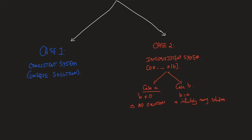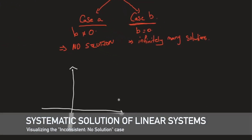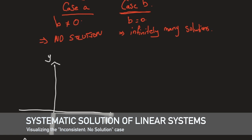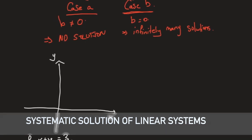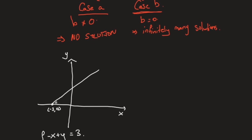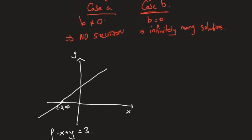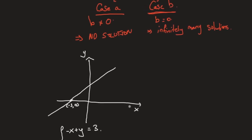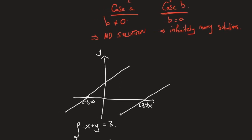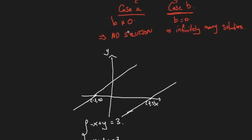To explain this graphically — imagine a 2D system with an x-axis and a y-axis. One equation is −x + y = 3, which passes through (−3, 0). The other equation is −x + y = −7, which passes through (7, 0) and is parallel to the first line. As you can see, both lines do not intersect, and hence we don't get a solution.